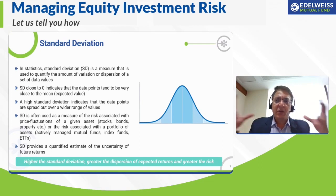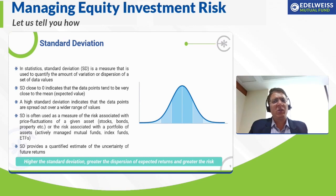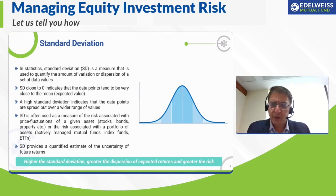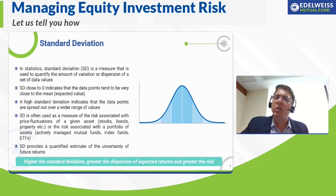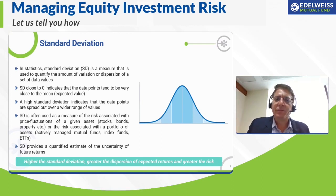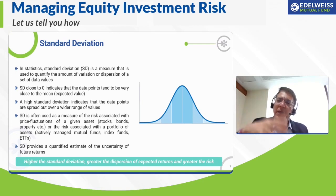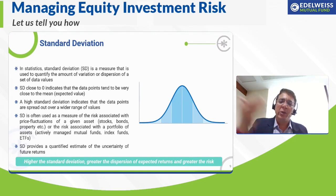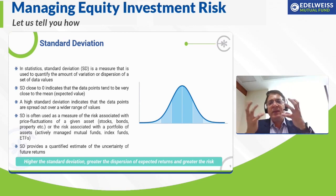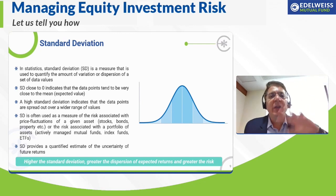Standard deviation is available in fact sheets and scheme information documents of most equity schemes. It is a very good data point to understand the quantum of risk your investment is taking, relative to the deviation it may be subjected to compared to the mean. In similar schemes, you want to be in one that deviates less, so choose the lower standard deviation scheme — because a higher standard deviation is exposing your investment to a greater degree of risk.